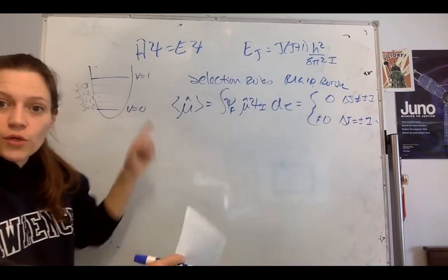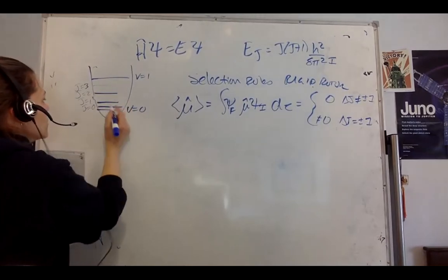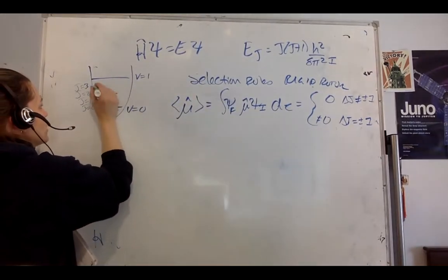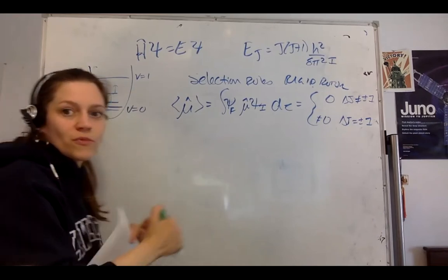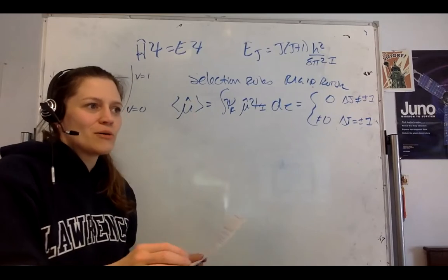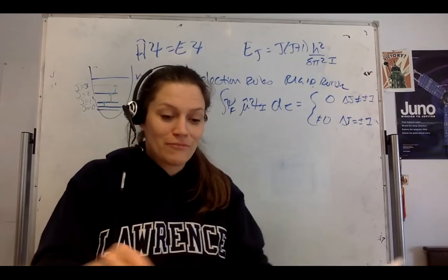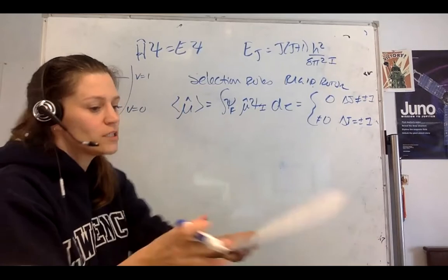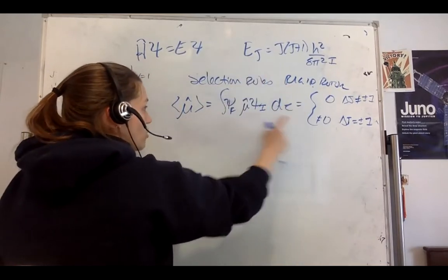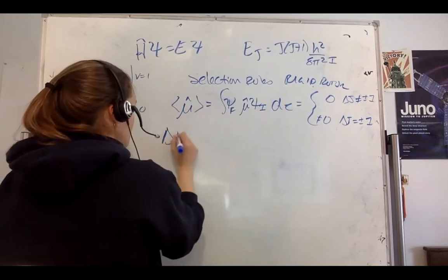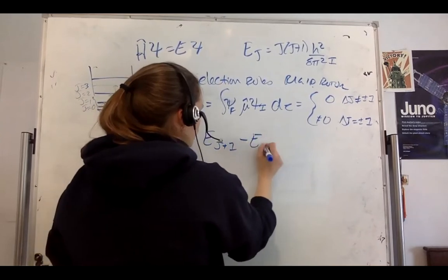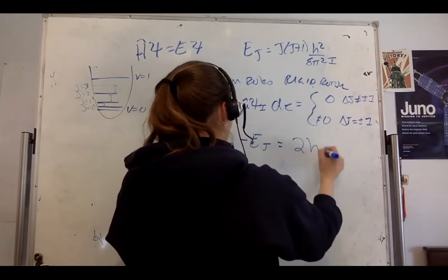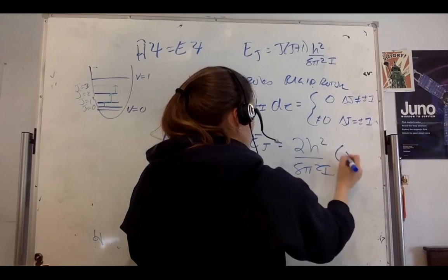That means you can only have transitions going from j equals 0 to j equals 1, j equals 1 to j equals 2, j equals 2 to j equals 3. Δj can only be ±1. If we take E_j from our selection rules, E_{j+1} minus E_j, I get lots of algebra. You can check my notes posted on Moodle: 2ℏ²/8π²I(j+1). That's the energy of our transition, so this is our ΔE.